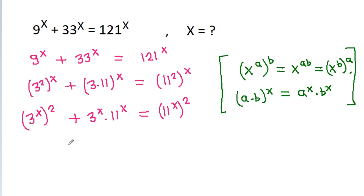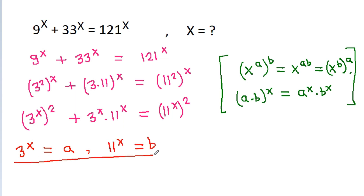Now we substitute: let a = 3^x and b = 11^x. The equation becomes a² + a·b = b².